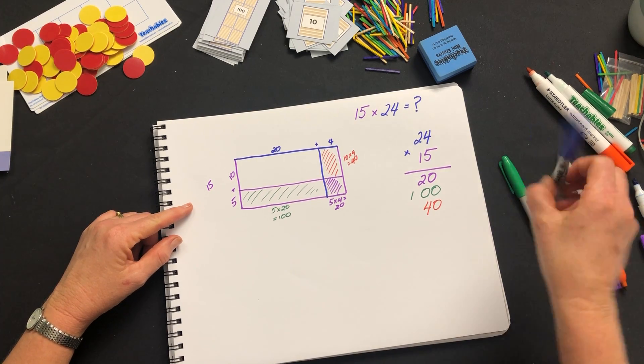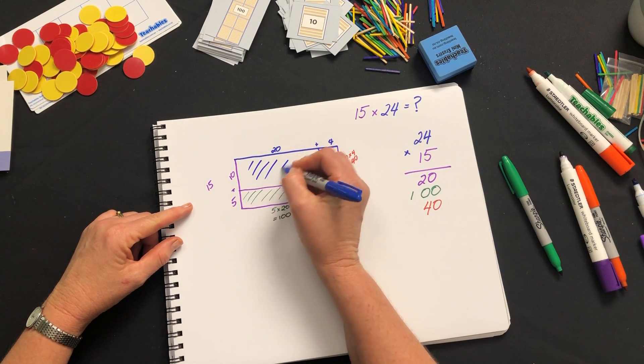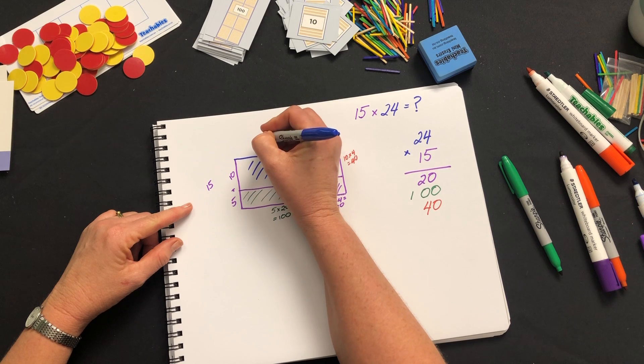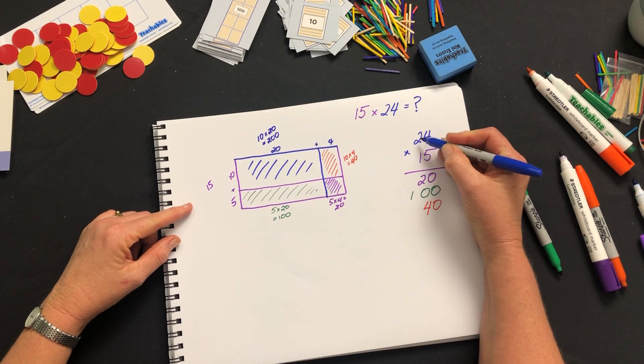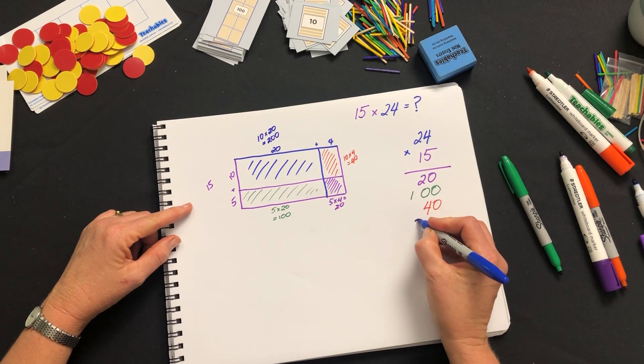And then finally over here is our final rectangle, our 10 by 20 which is 200. 10 by 20 is 200.